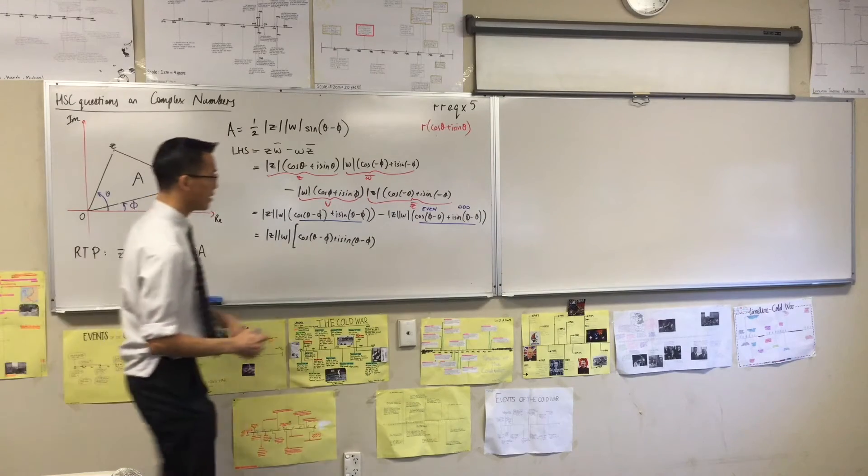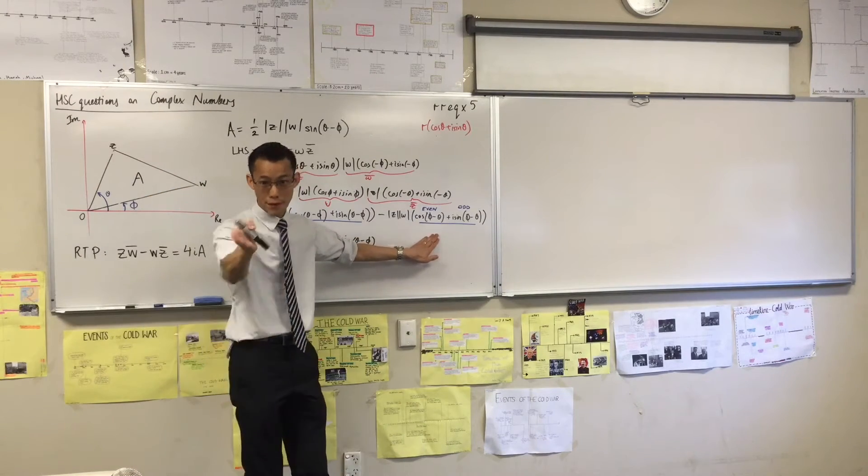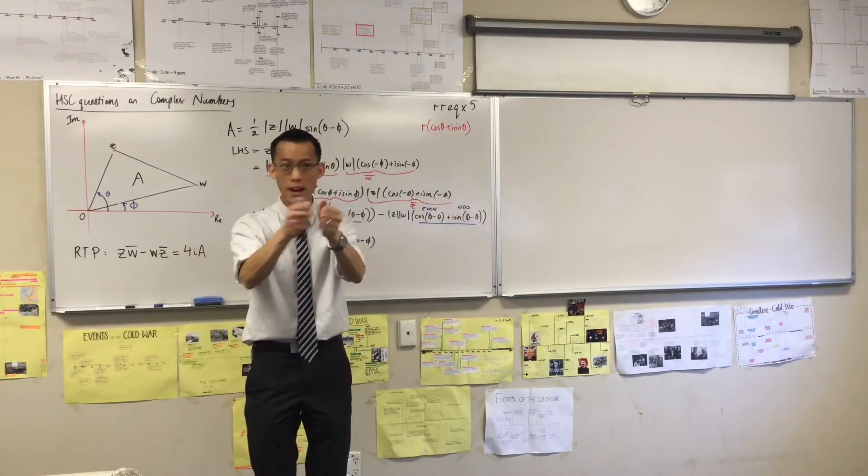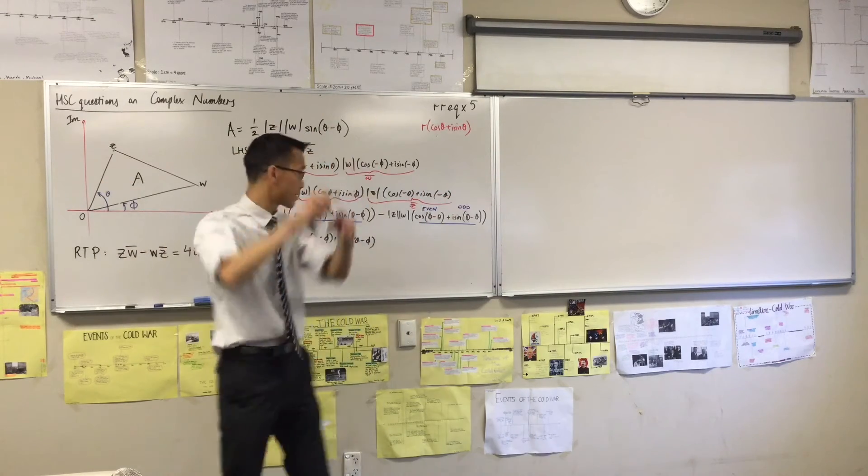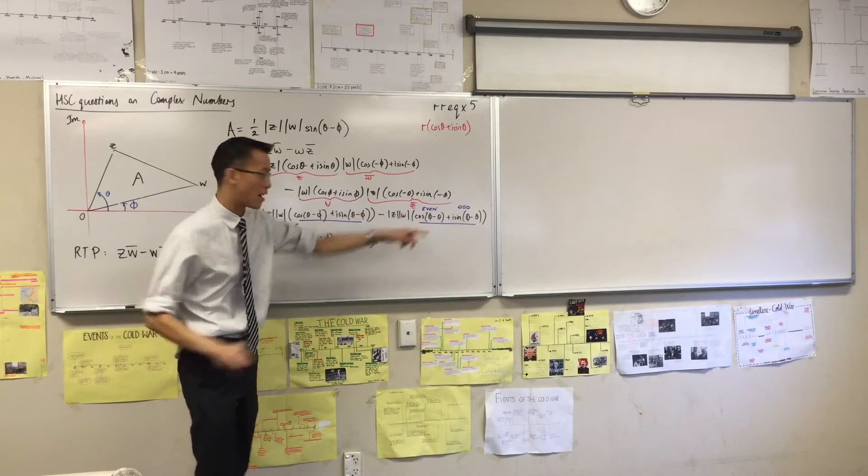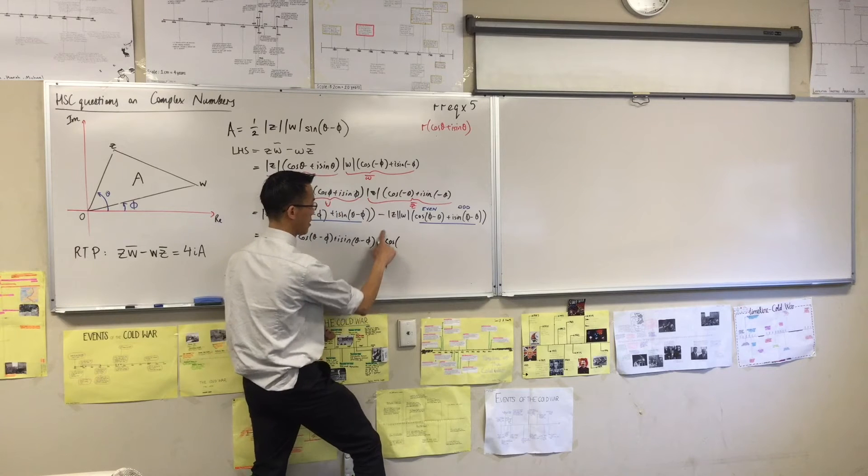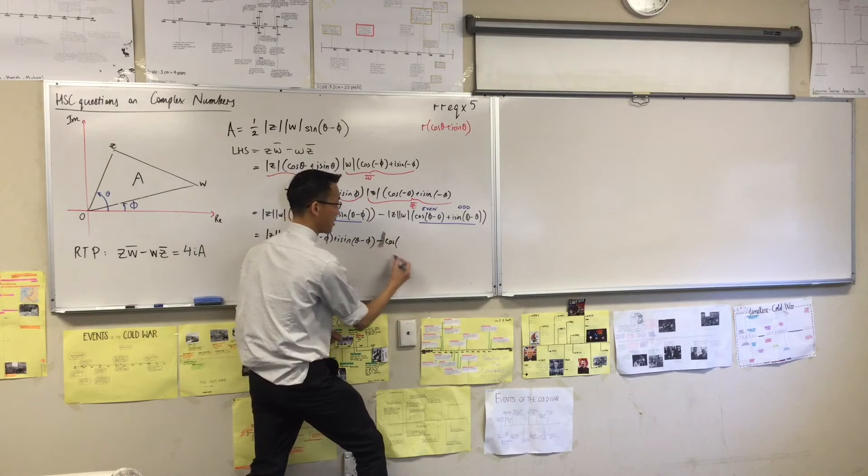So what that tells me is that for an even function, f of x and f of negative x are the same, right? Because that's why you've got this symmetry. So I can just replace that guy with... Oops, that's a minus. Sorry. Watch out for that one. Proof's not going to work if we don't do that.